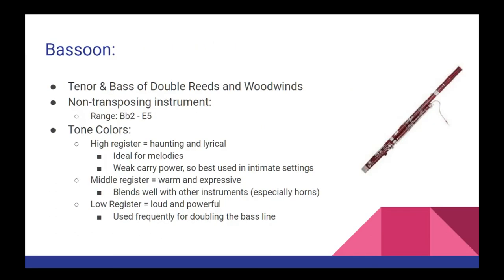Next up we have the bassoon, acting as both a tenor and bass instrument for the double reeds, and the woodwind section in general. The bassoon has a range of Bb2 to E5. Its highest register is very haunting and lyrical, making it an ideal choice for melodies in very intimate settings — remember that double reeds have less power in their upper registers. Its middle register is incredibly warm and very expressive, and an excellent choice for blending with other instruments. The low register is very loud and powerful, with some good heft to it, and is typically used for doubling the bass line.